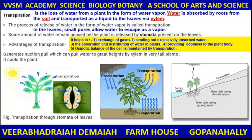This process helps in exchange of gases, sending out excessively absorbed water, the absorption and distribution of water in plants providing coolness to the plant body. Osmotic balance of the cell is maintained by transpiration.